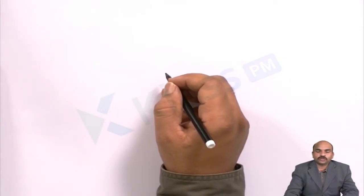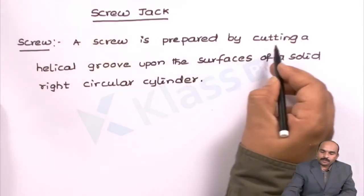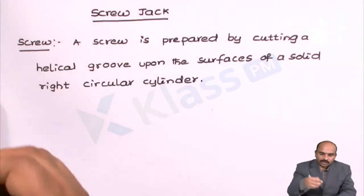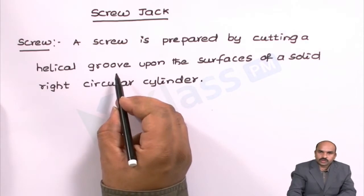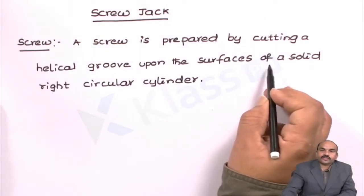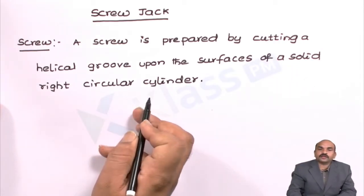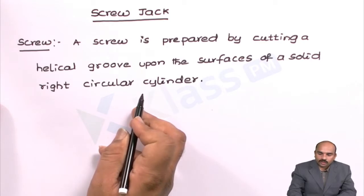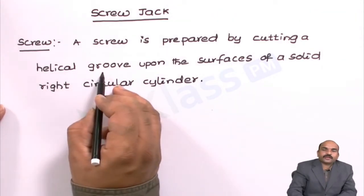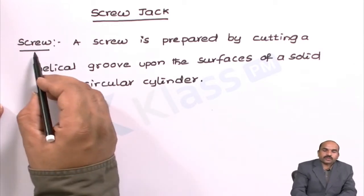We are going to discuss about the screw jack. A screw is prepared by cutting helical grooves — helical means the inner shape of the helical grooves, the helical slots — apart the surfaces of a solid right circular cylinder. So over the surface of the cylinder, by cutting these helical grooves, you get the screw.